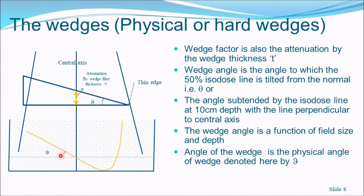If this angle is 15 degrees, the wedge is called a 15-degree wedge; if 30, a 30-degree wedge. The attenuation by the wedge at the central axis is referred to as the wedge factor, discussed in detail previously. The wedge angle is a function of field size and depth, but the reference wedge angle is taken at either the 50% isodose line or the isodose line at 10 cm depth.